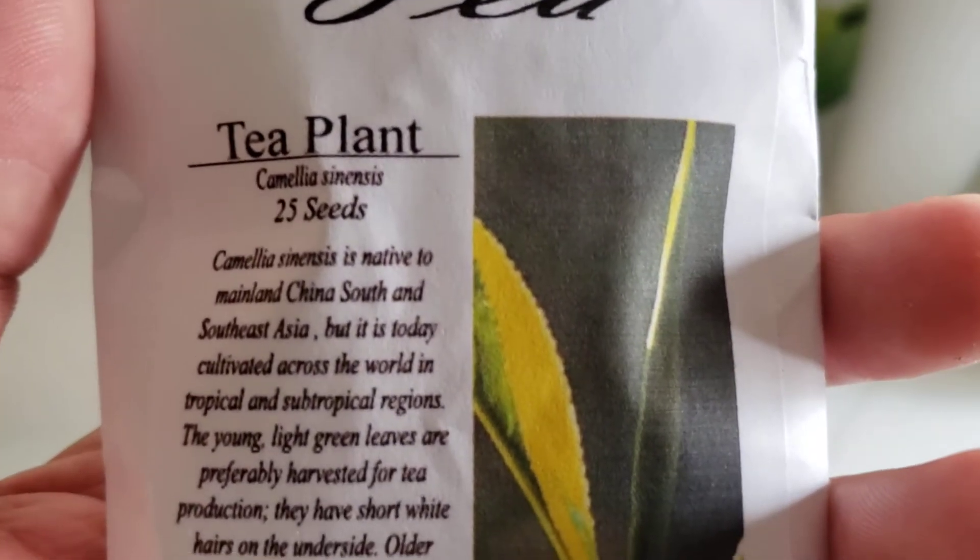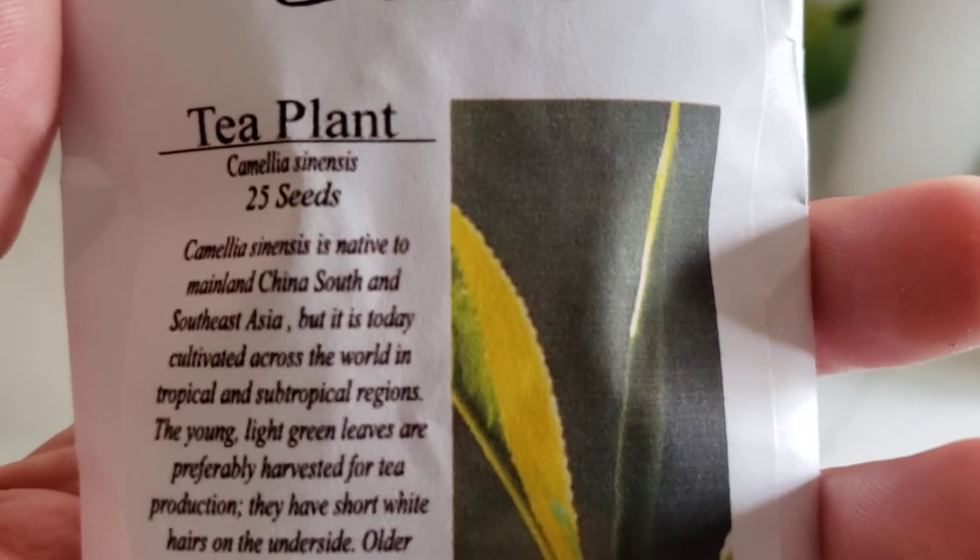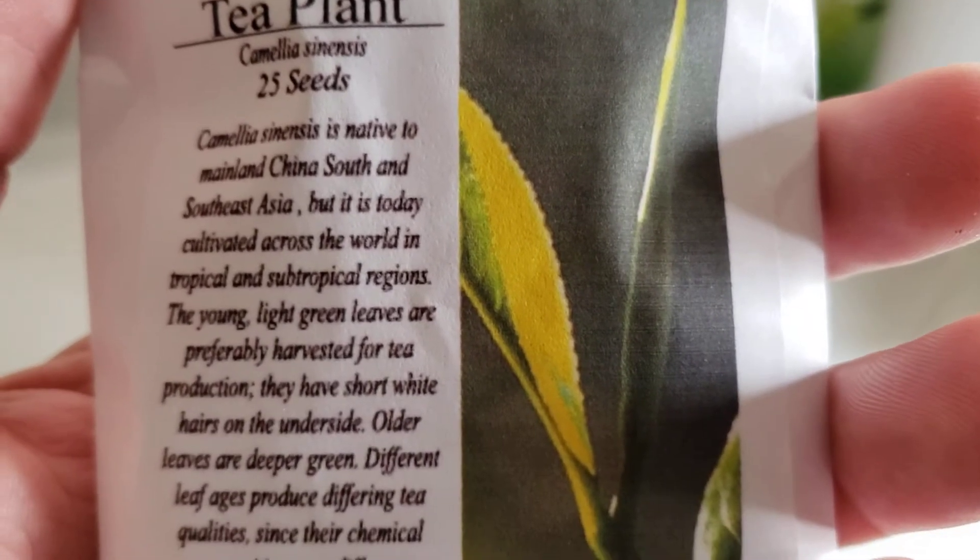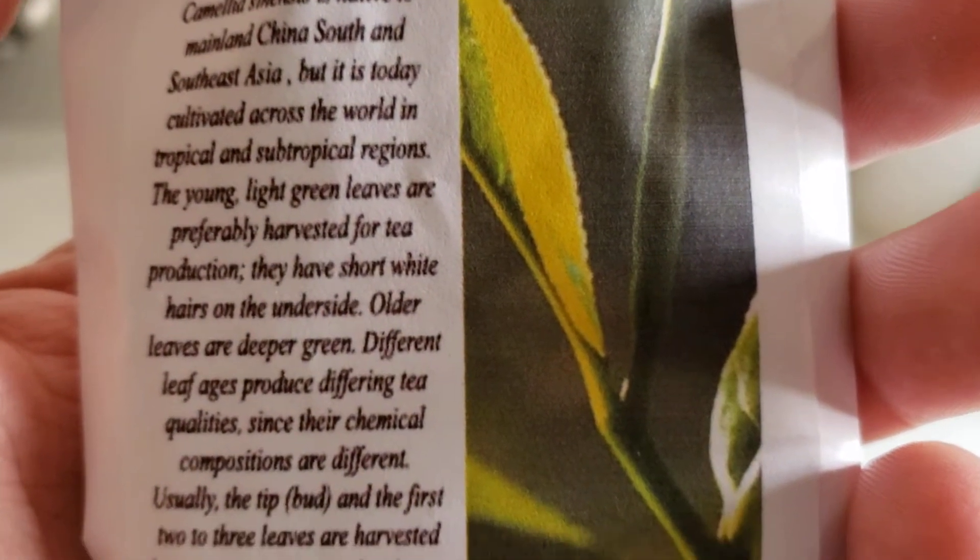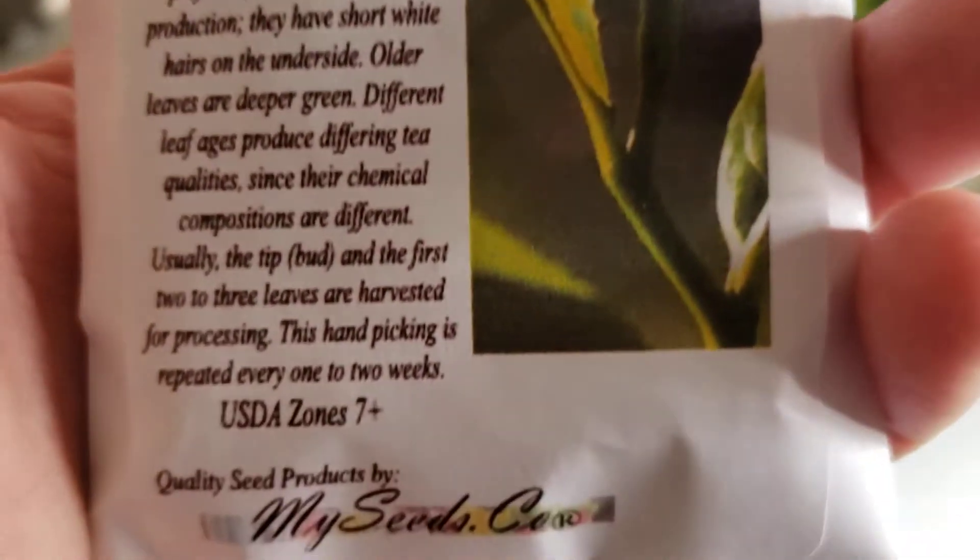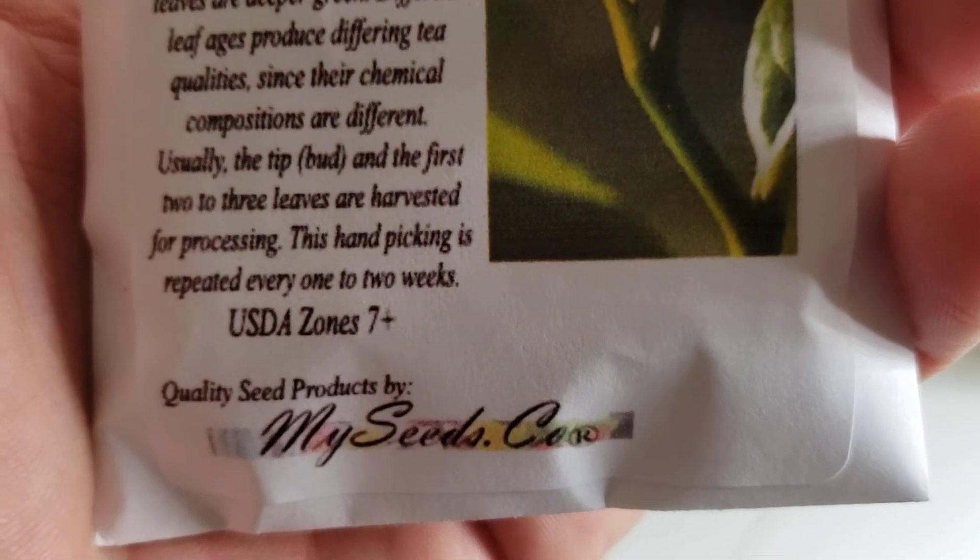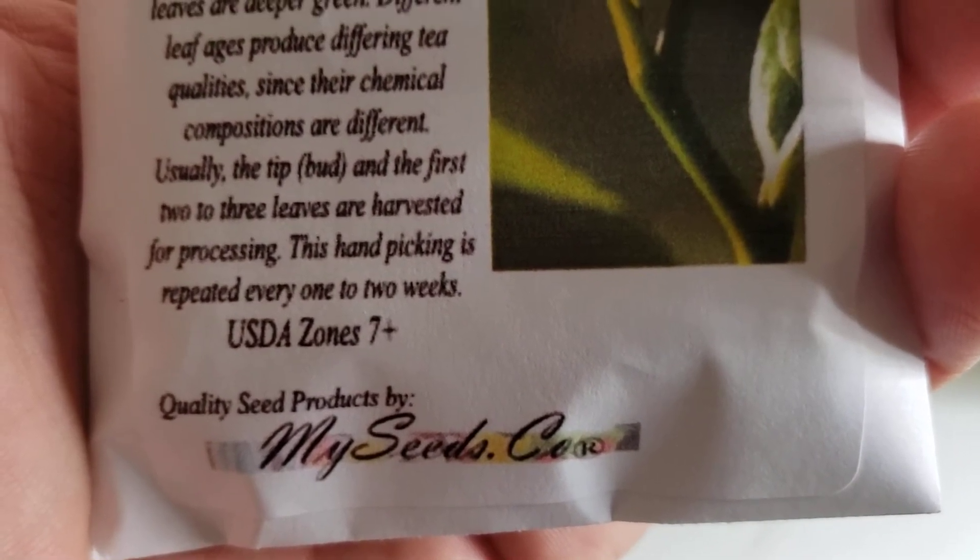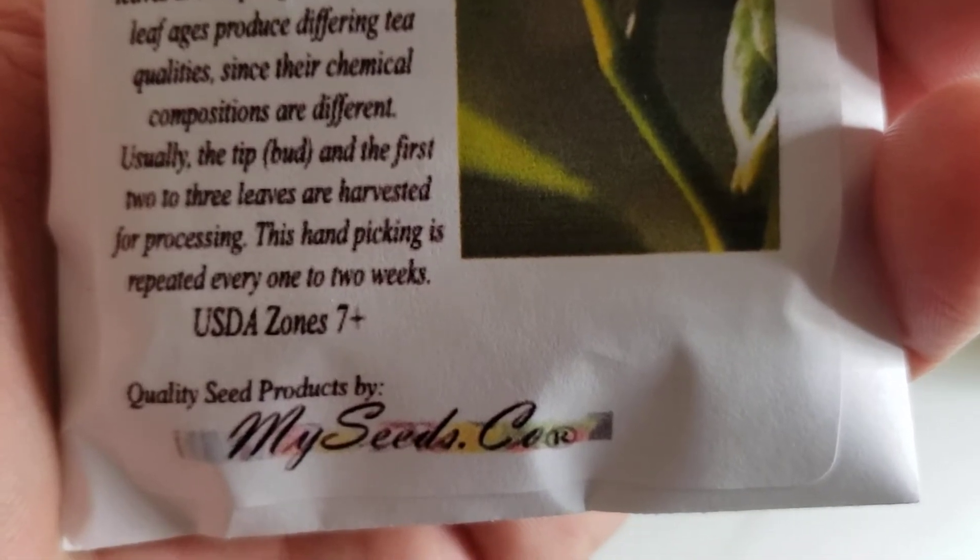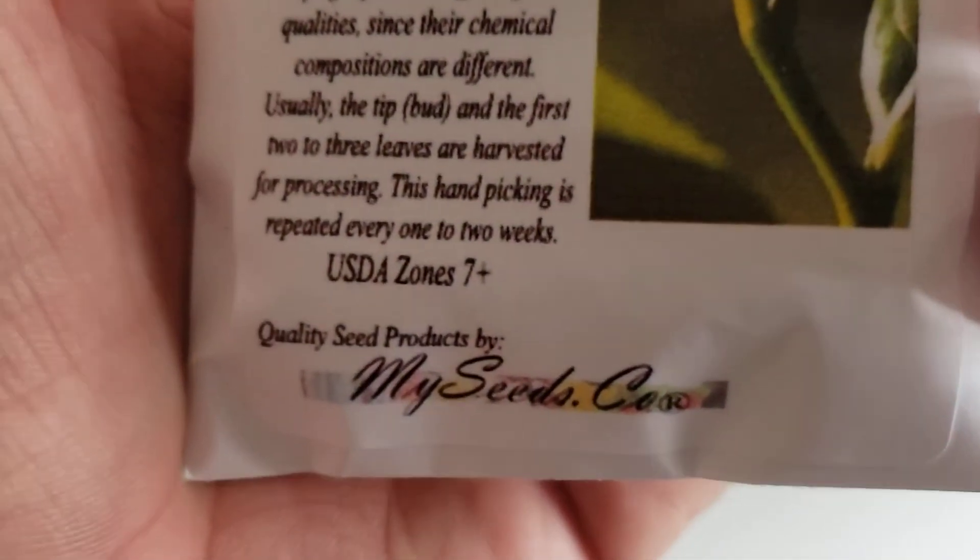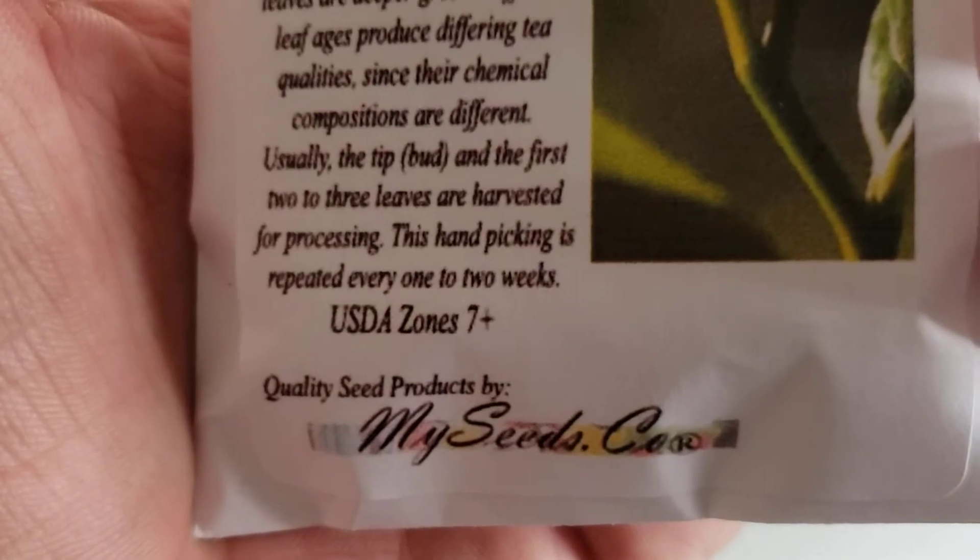I'm going to grow tea plants, or Camellia sinensis. As you can read, it is native to South China and Southeast Asia and is cultivated all around the world. According to the USDA, this plant is good for zone 7 and above. I'm in Northern California, which is about zone 9, 9b.